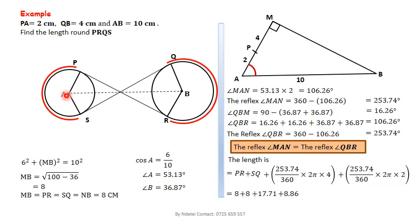And therefore, we add those figures to get this: PR and SQ are 8. This particular part is 17.71 and the next one is 8.86. So adding those, you get 52.57 degrees.